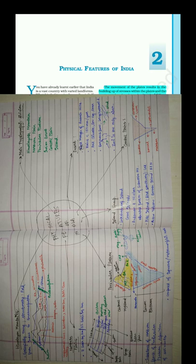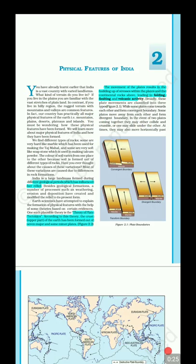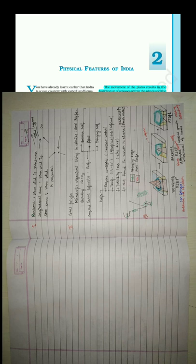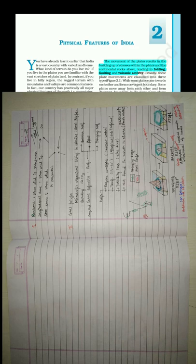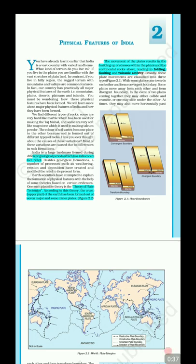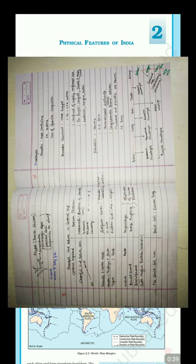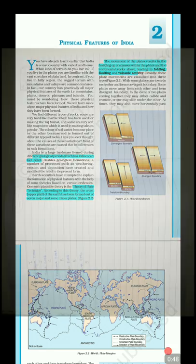India is a large landmass formed during different geological periods, which has influenced its relief. Besides geological formations, a number of processes such as weathering, erosion, and deposition have created and modified the relief to its present form.